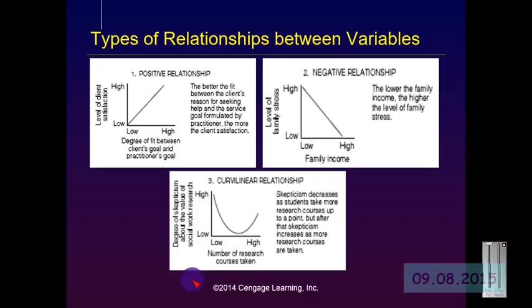Next semester, when we get into quantitative statistics, we will chart the relationship between dependent and independent variables. In this slide we see three examples of linear relationships. Many times journals will simply say that there was a positive relationship between the level of drinking and legal difficulties — meaning the more one drinks, the more one gets into legal difficulties. As one goes up, the other goes up. In this example, the level of fit between the client's reason for coming to treatment and the service goal formulated by the practitioner positively relates to the level of client satisfaction.